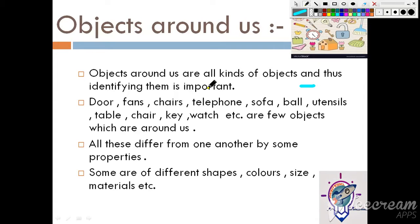If you go to your drawing room, you will be able to see television, sofa set, books, chair, table and so on. And if you go to your kitchen, you will be able to see utensils, gas cylinder and many more things. Therefore, we can say that there are a huge variety of objects we see around us.